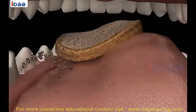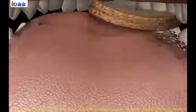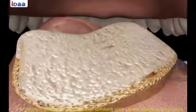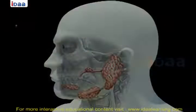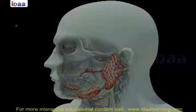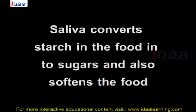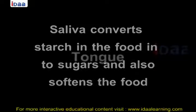Action of saliva on food. During chewing, food mixes with saliva. Saliva is secreted from salivary glands located on the lower jaw between the tongue and teeth. Saliva converts starch in the food into sugars and also softens the food.